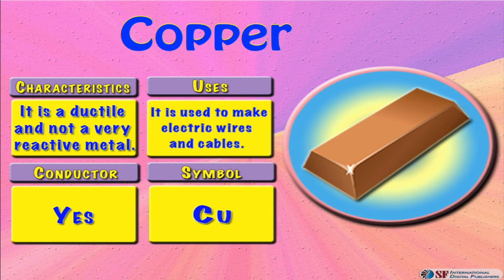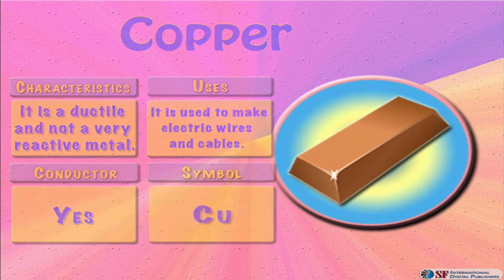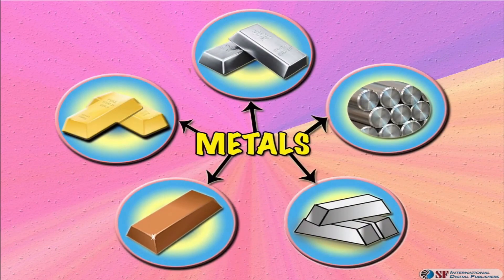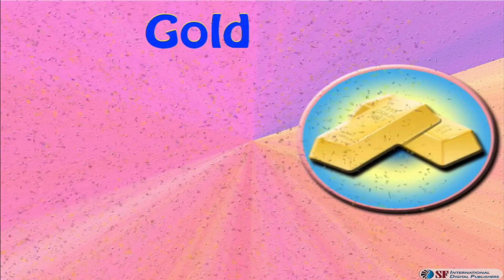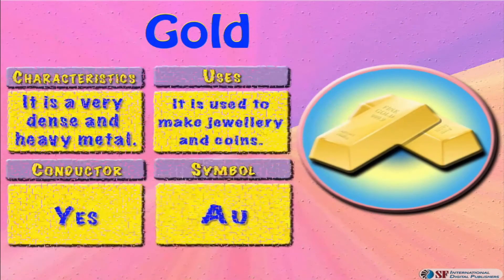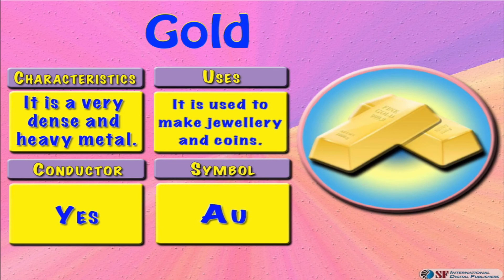Gold. It is a very dense and heavy metal, yet it's rather soft by nature. It is used to make jewelry and coins. It's a good conductor of electricity, and its symbol is Au.